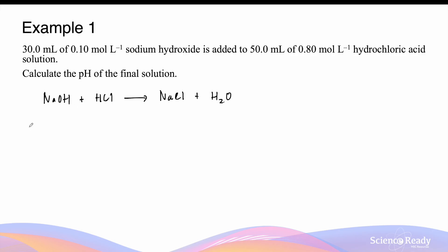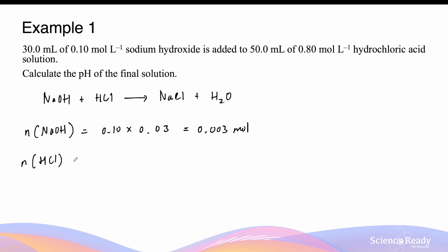To calculate the final pH, it is important to determine whether your acid or base is in excess. To determine this, we need to first calculate the number of moles of sodium hydroxide and the number of moles of hydrochloric acid. The moles of sodium hydroxide, since we're given the concentration and volume, is given by its concentration multiplied by its volume in liters. This will give me 0.003 moles. The number of moles of hydrochloric acid is 0.80 moles per liter times 0.05 liters, which is equal to 0.04 moles.